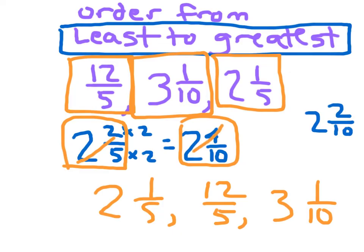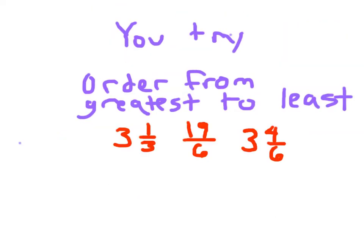So this is our list, ordered from least to greatest. Look one more time to make sure you've included all of those numbers that were originally given in the correct form. Now it's your turn — order this list from greatest to least. Show your work. You might want to change 19 sixths into a mixed number. Please hit pause.